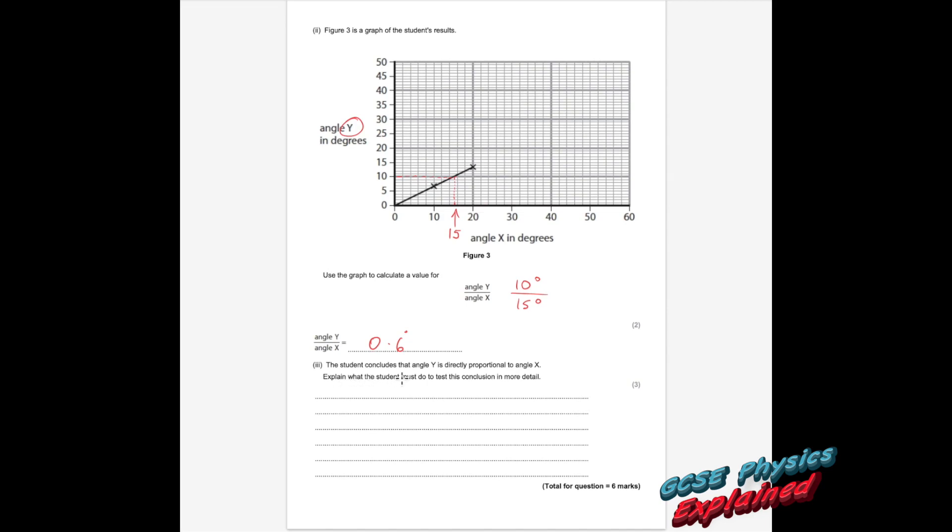Part 3. The student concludes that angle Y is directly proportional to angle X. Explain what the student must do to test this conclusion in more detail. Well, directly proportional means if one angle doubles, the other angle doubles, and it goes through the origin. They've only took two results, so that's a bit pathetic. They need to take more results at greater angles and then repeat it. It's worth three marks, so that'll get you the three.